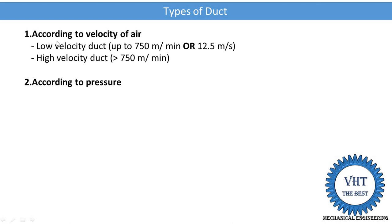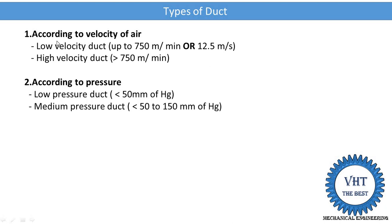The second classification is according to the pressure of the air inside the duct. On the basis of pressure, it is classified into three types: low pressure duct, medium pressure duct, and high pressure duct. In the low pressure duct, the pressure of the air is less than 50 mm of water gauge or 50 mm of Hg. Then it is known as the low pressure duct. Next is the medium pressure duct.